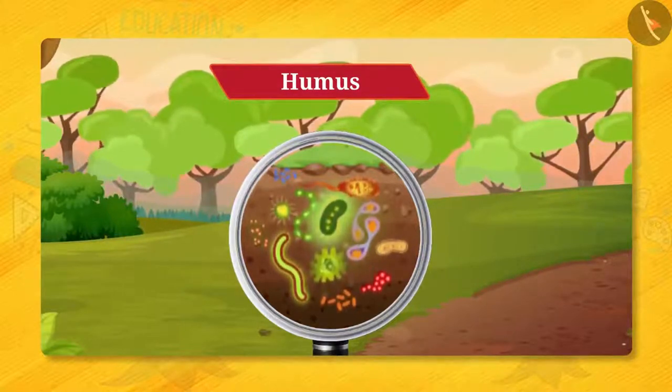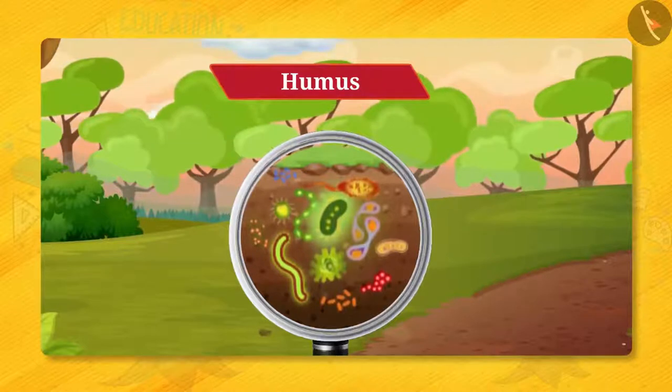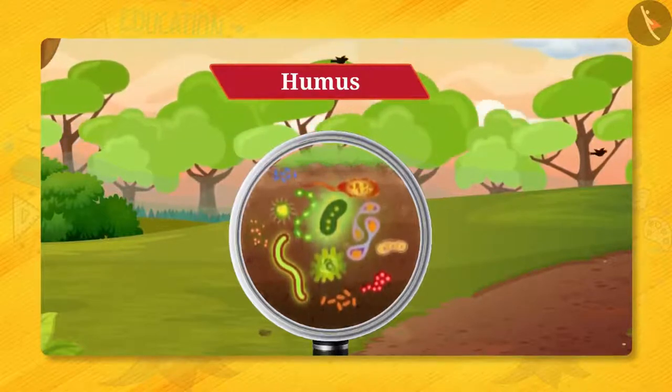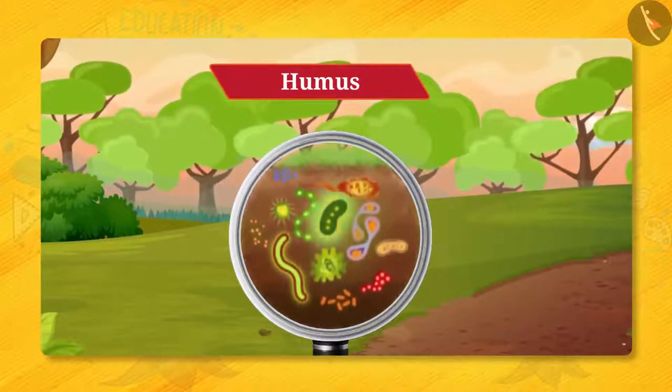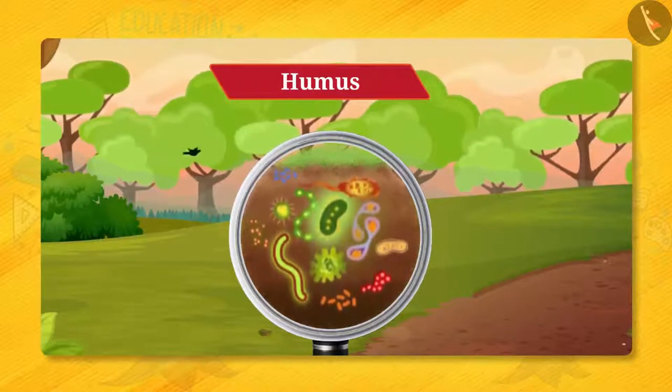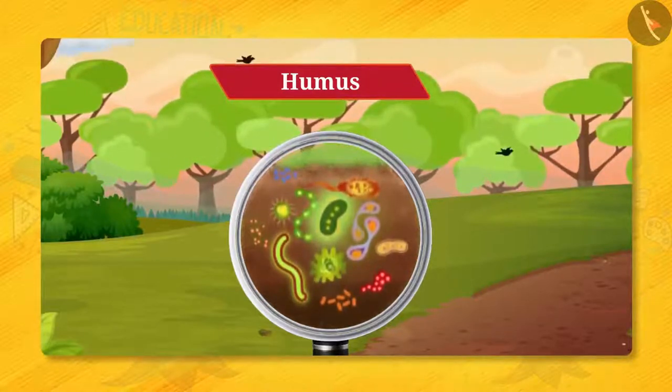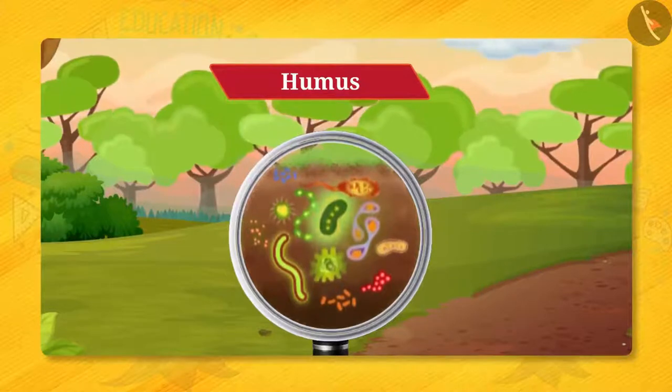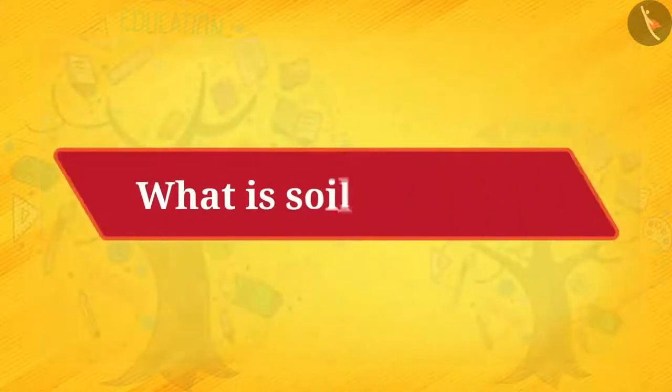The organisms living in soil cannot be seen with the unaided eyes, but can be seen with the help of a microscope. So what did you get to know? What is soil made of? The soil is made up of tiny particles, humus, and microorganisms.